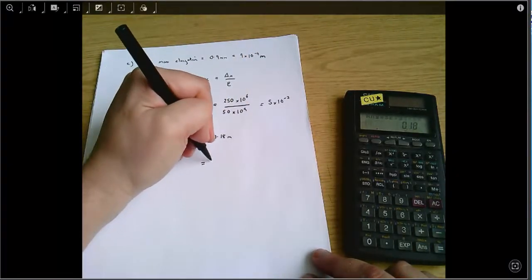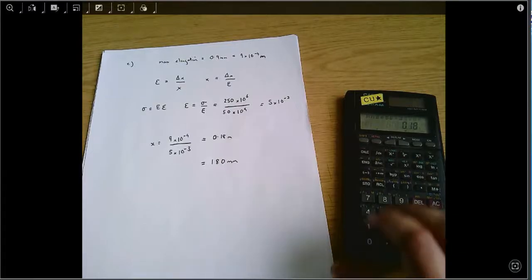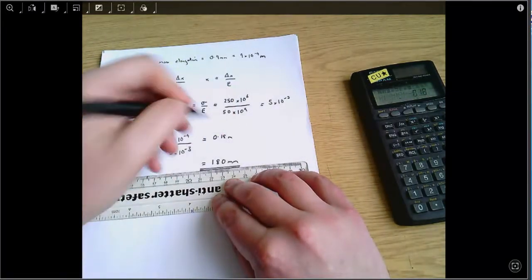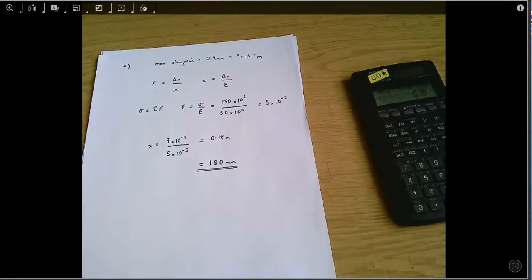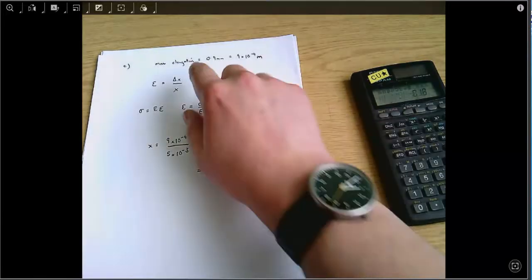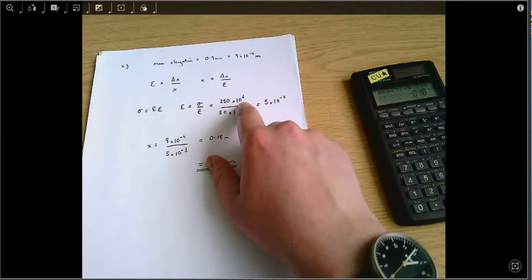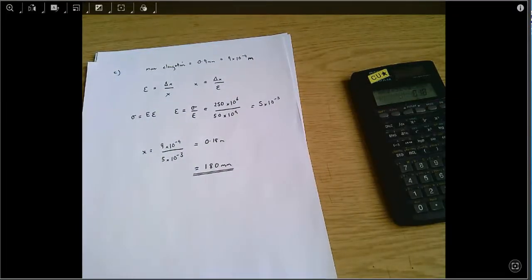So the original length of the bar, it doesn't really matter how you want to express that, 0.18 metres is fine. I'll just rewrite it as 180 millimetres. And that is the length of the bar that we're starting from. If you had a longer bar than that, then the elongation at 250 megapascals stress would be greater than 0.9 millimetres. And that's the answer to that question.